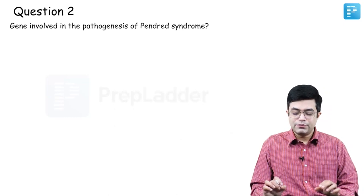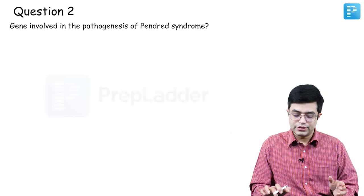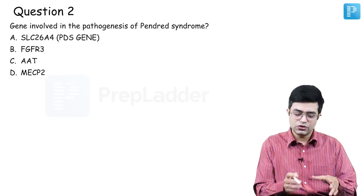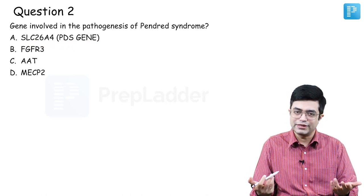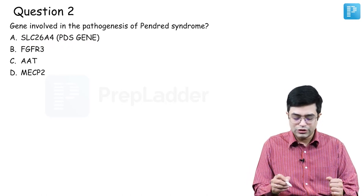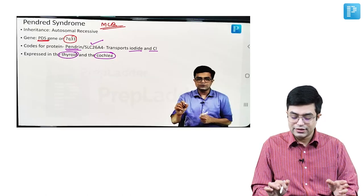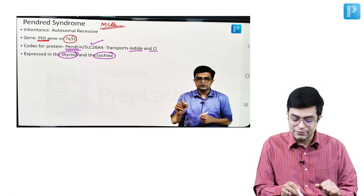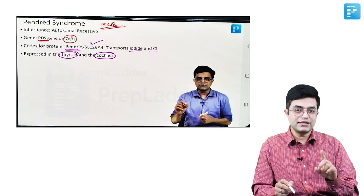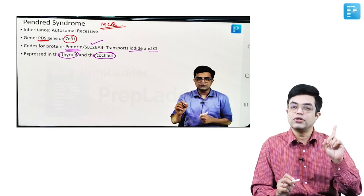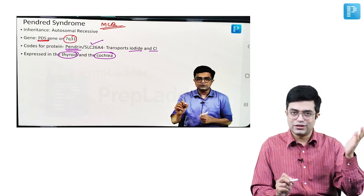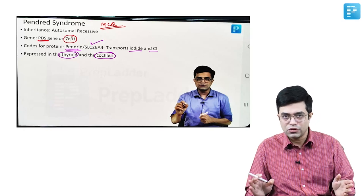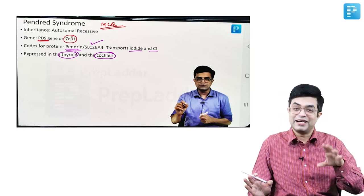Question number two: gene involved in the pathogenesis of Pendred syndrome. One option was SLC26A4 and some people said PDS gene — they are alternative names of the same gene and same protein involved. The answer is obviously A. I had told you in one of my previous videos that a potential MCQ on Pendred syndrome was likely to be asked because it had already been asked once in INI and AIIMS Super Speciality exam. There is a possibility of this question coming over to NEET SS, and it did.